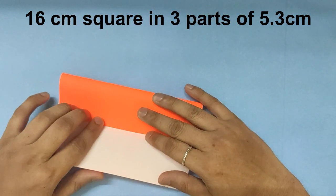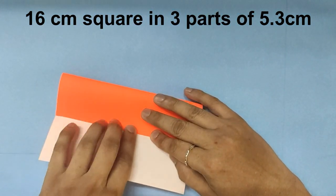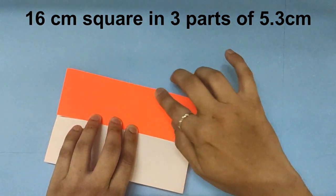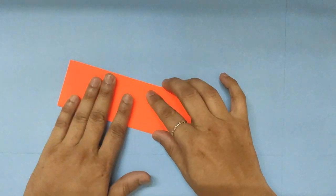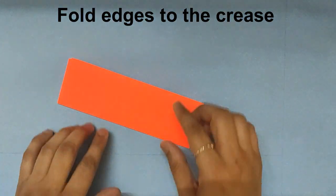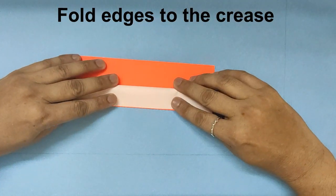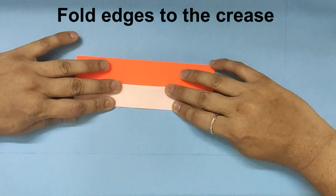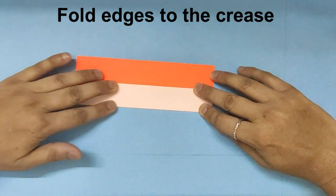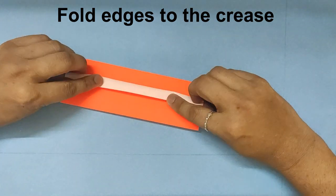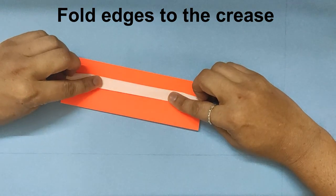So I fold this paper into three parts. Next you fold the edge up to the crease. Open the fold and then fold it up to the center again.